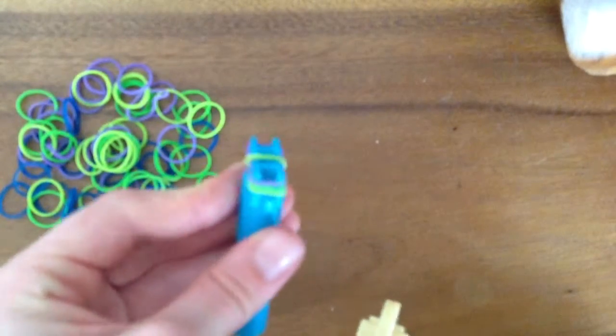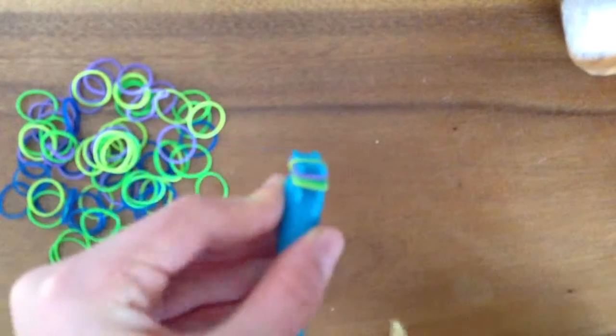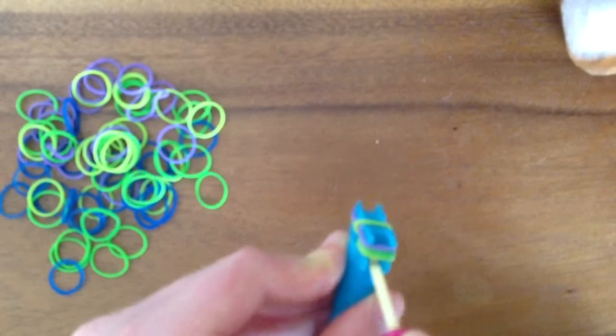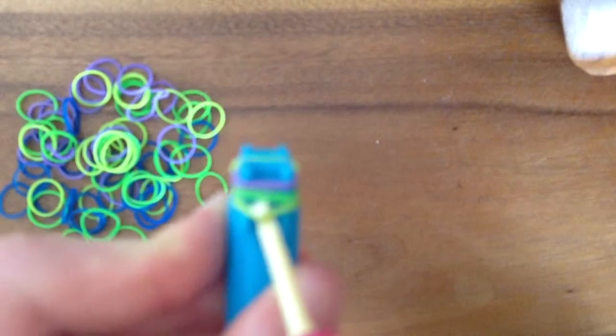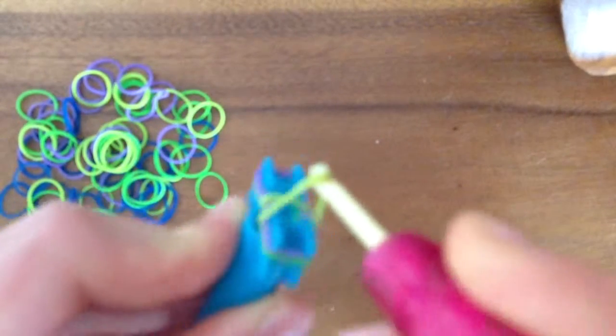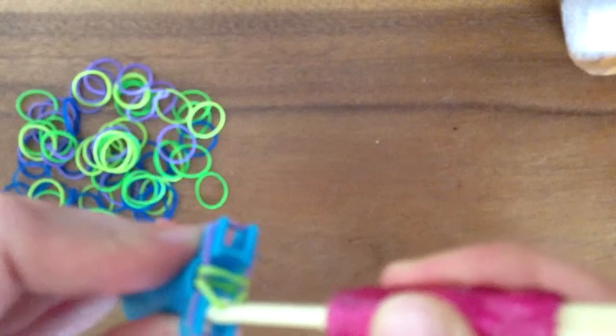Now you're going to turn the loom around, go in that little gap, pick up the first one, the bottom one, bring it all the way around and let go.